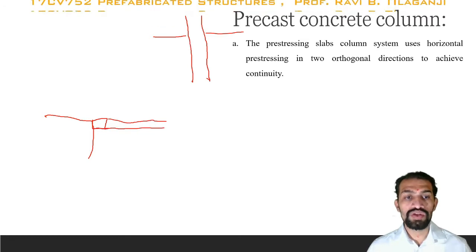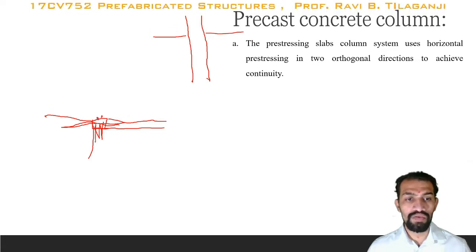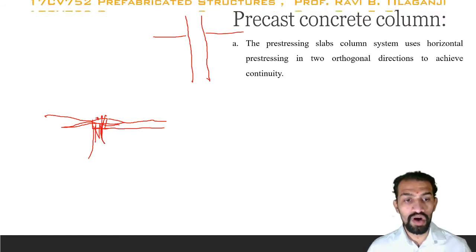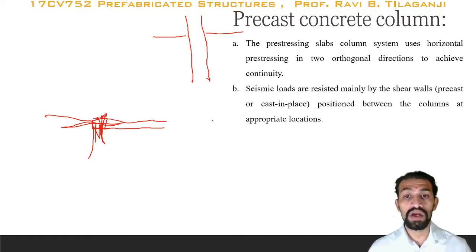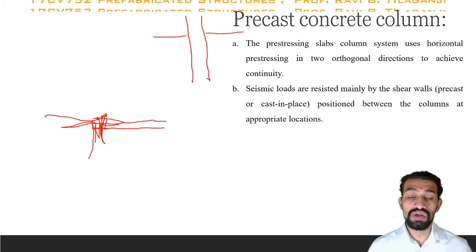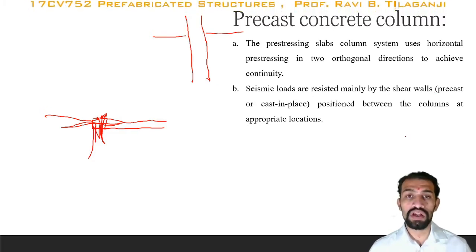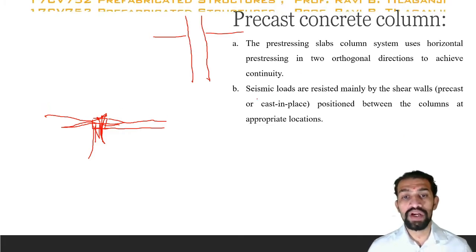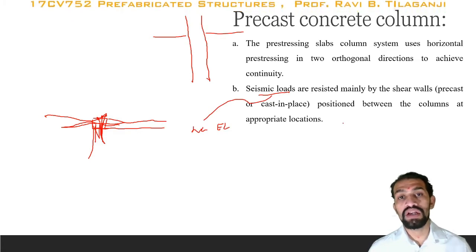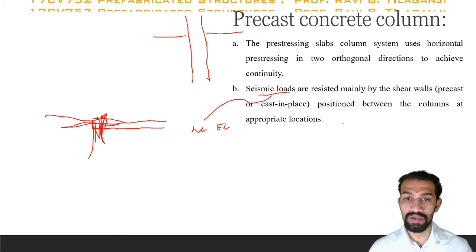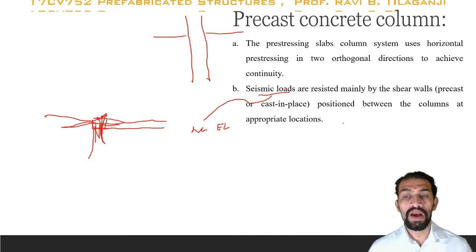The embedded reinforcements are provided in both directions. To achieve continuity or monolithic construction, the reinforcements from outside are cut and bolted with bolt connections at the joint. Seismic loads — wind load and earthquake load — are resisted mainly by shear walls cast in place between the columns at appropriate locations, which is especially important for high-rise structures.